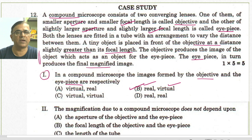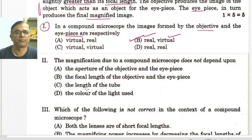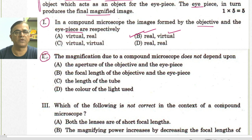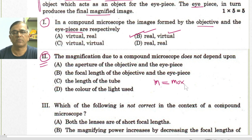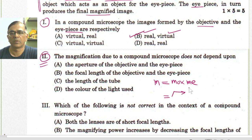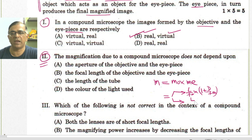Now let's proceed to the second part of this case study. The question asks what the magnification of the compound microscope does not depend upon. The formula for magnification is M = MO × ME, which equals (L / FO) × (1 + D / FE) when the final image is formed at the least distance of distinguishing, and also equals (L / FO) × (D / FE) for the other case.